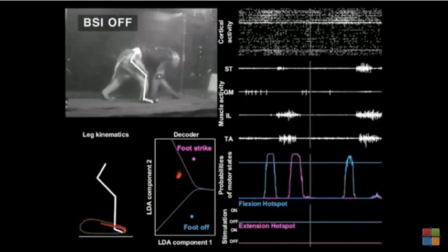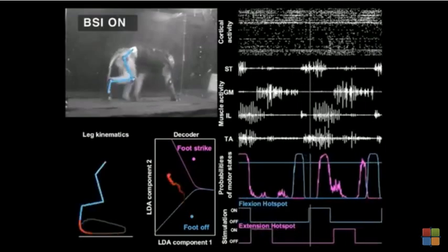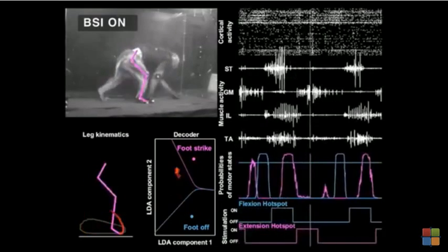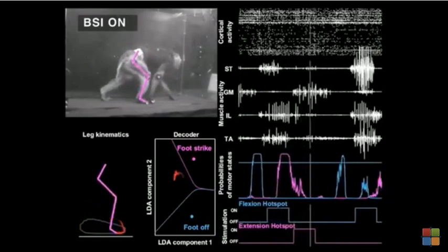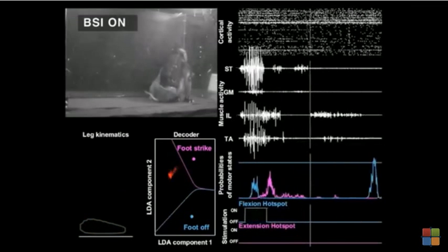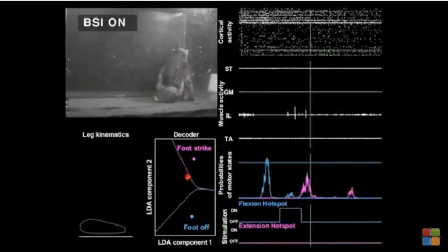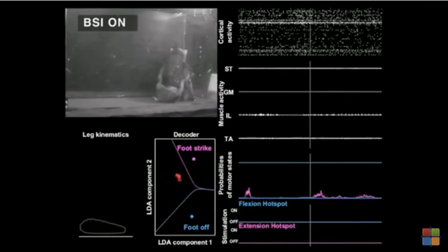These predictions directly triggered stimulation protocols that augmented the extension and flexion movements of the leg without disrupting the natural locomotion of the monkeys. No motor states were detected during rest.